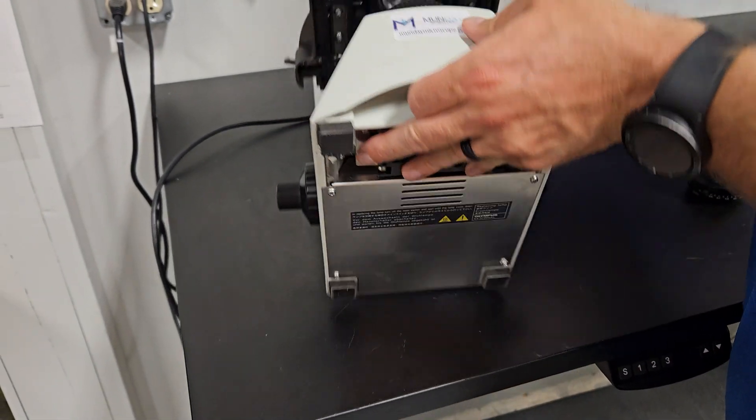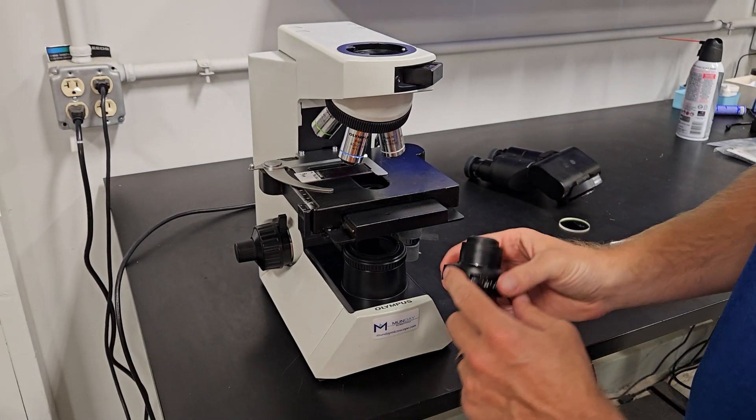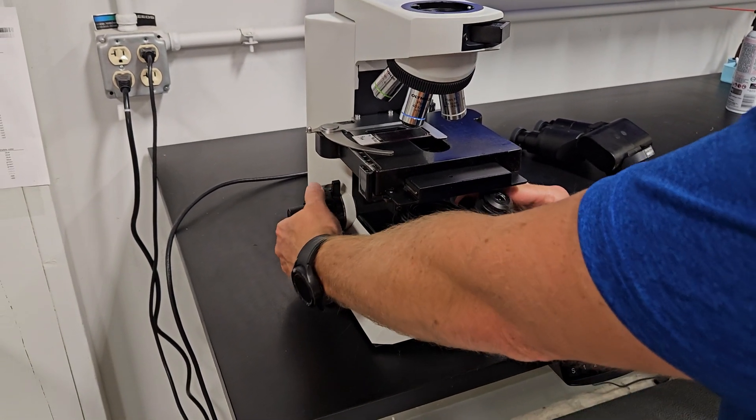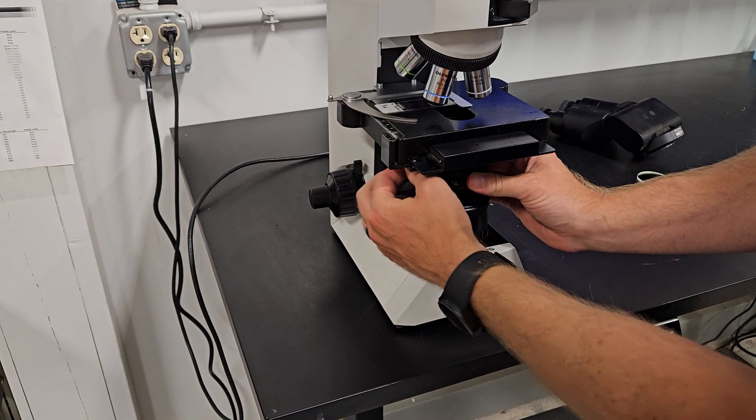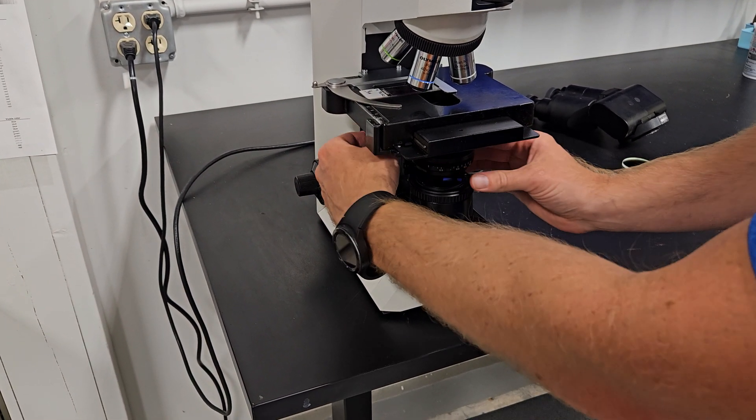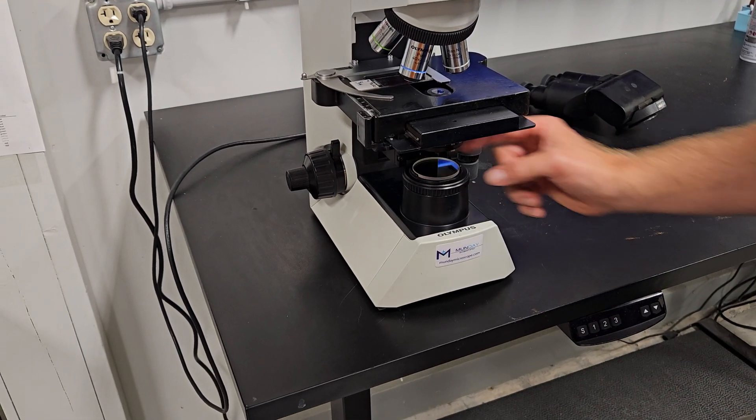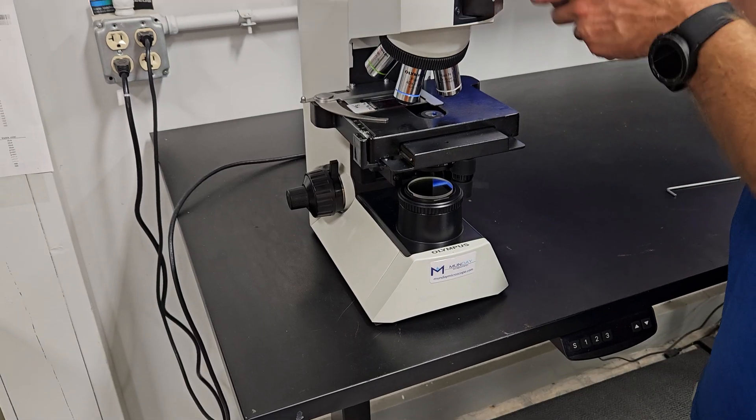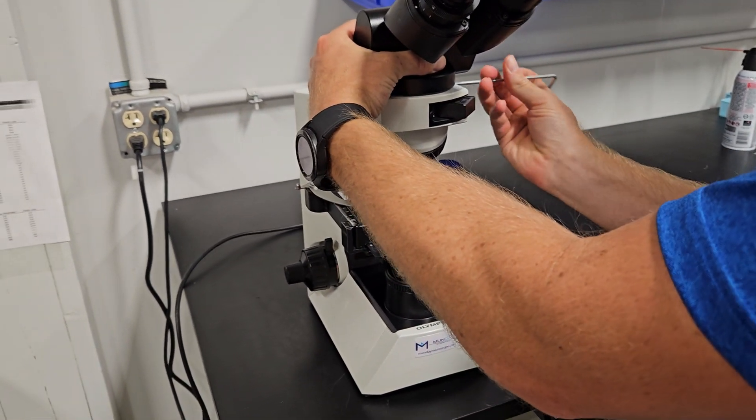We're going to put the scope back together just to help for whenever you receive it. The condenser may be out. We're going to slide it up in there, tighten that screw, raise the condenser to the top position. We're going to put the filter back on and then the head. Very simple. This is a nice little microscope.